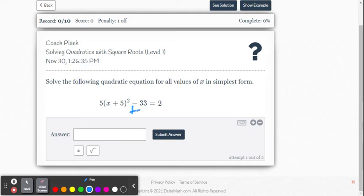So the first thing we're going to do here is we're going to add 33 to both sides of the equation. So then we have 5 times x plus 5 squared equals 35. Then remember,